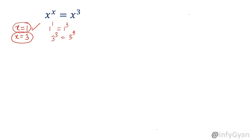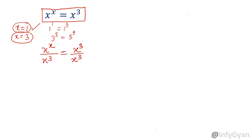I am dividing both sides of this equation by x cube. So x power x divided by x cube equals x cube divided by x cube. Since I am dividing by x cube, my denominator cannot be 0, which means x cannot equal 0 — so x must be non-zero. If the denominator becomes 0, it goes to infinity or an indeterminate state. So x power x divided by x cube equals 1.